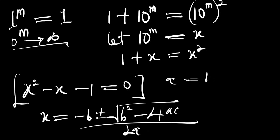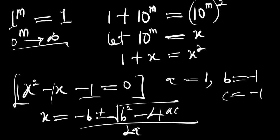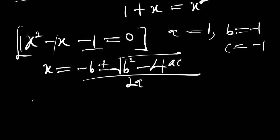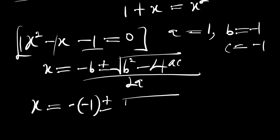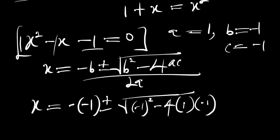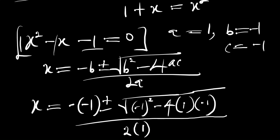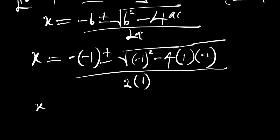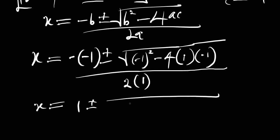Here a equals 1, the coefficient of x squared; b equals negative 1, the coefficient of x; and c equals negative 1, the constant. Substituting in, we have x equals negative of negative 1, plus or minus the square root of negative 1 power 2 minus 4 times 1 times negative 1, all divided by 2 times 1.